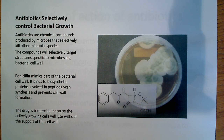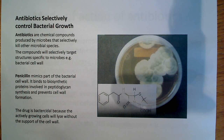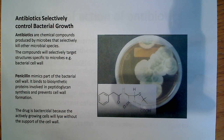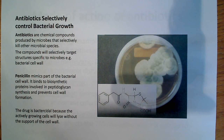Antibiotics selectively control bacterial growth. Antibiotics are chemical compounds produced by microbes that selectively kill other microbial species. These are essentially defense mechanisms that bacteria have. They produce these agents, and they're usually specific — specified for a particular part of the bacteria, such as the cell wall, or maybe DNA and RNA synthesis. These compounds selectively target structures specific to microbes.